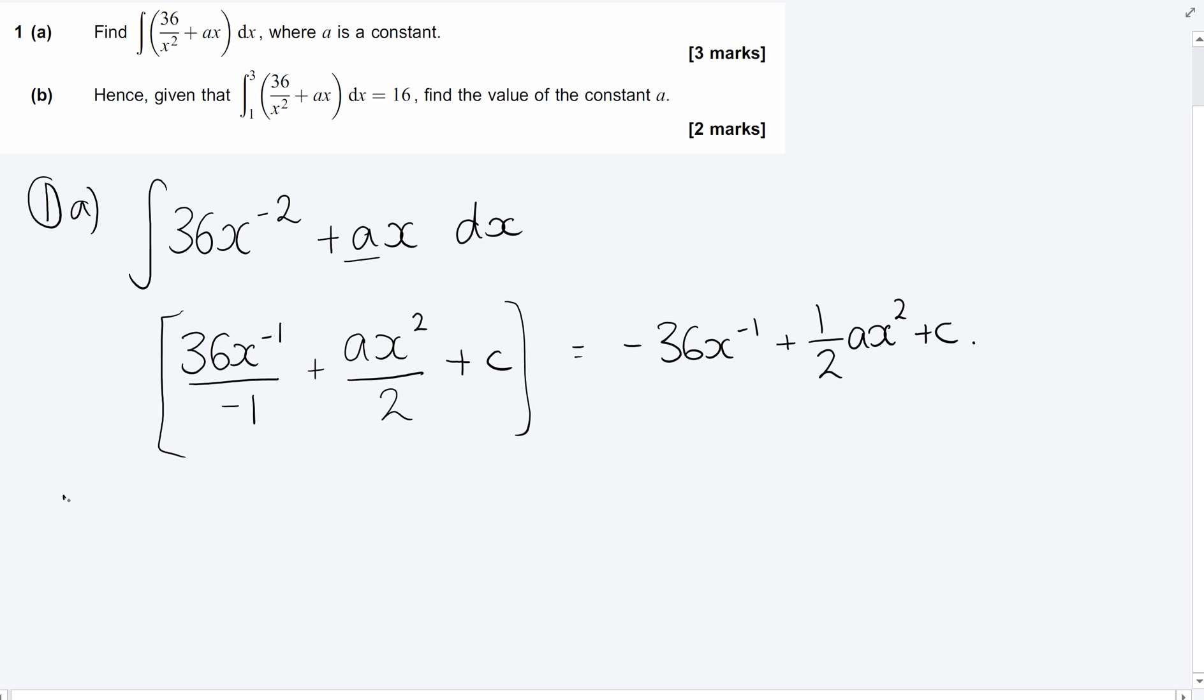Now for part b, we've got quite a lot of work to do here for our two marks. We are told that the thing we've just integrated, when we sub in the limits three and one, that is equal to 16. So this is going to be how we're going to find our value of a.